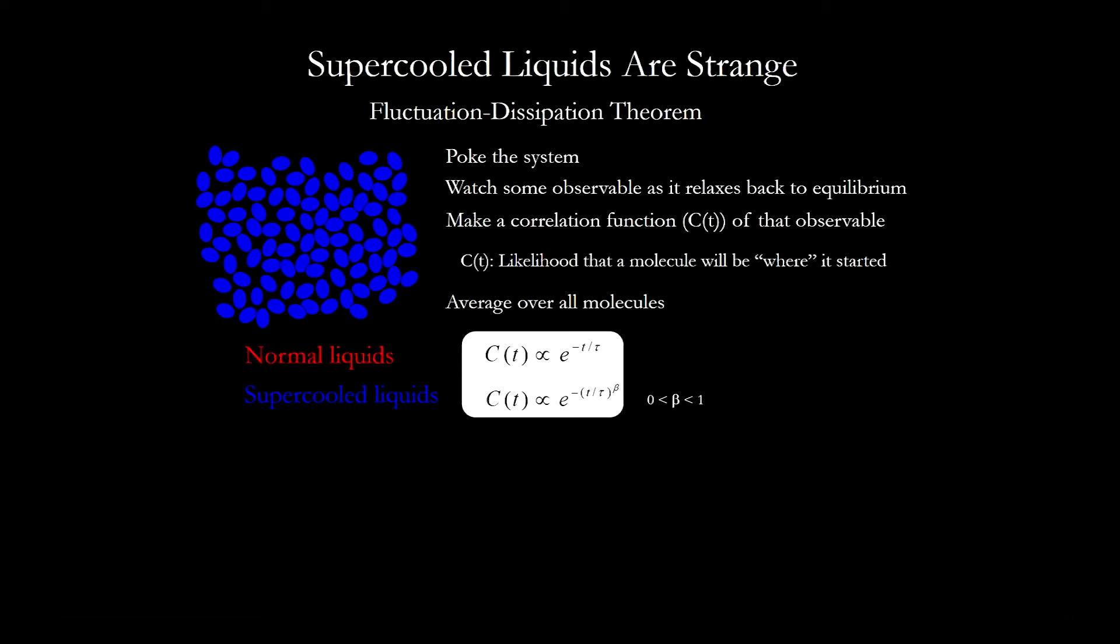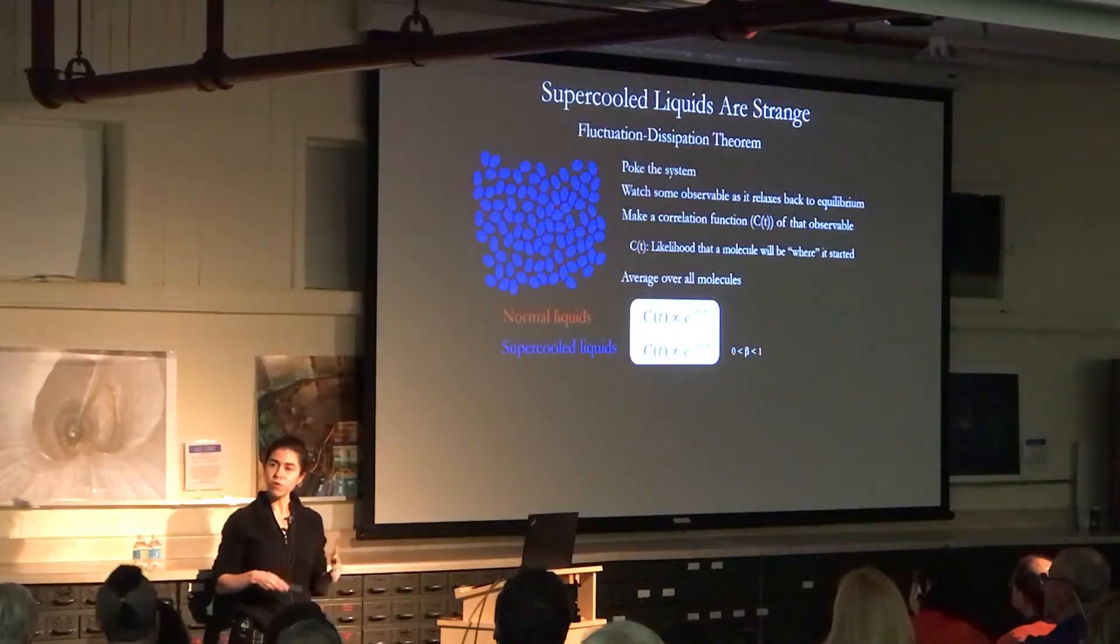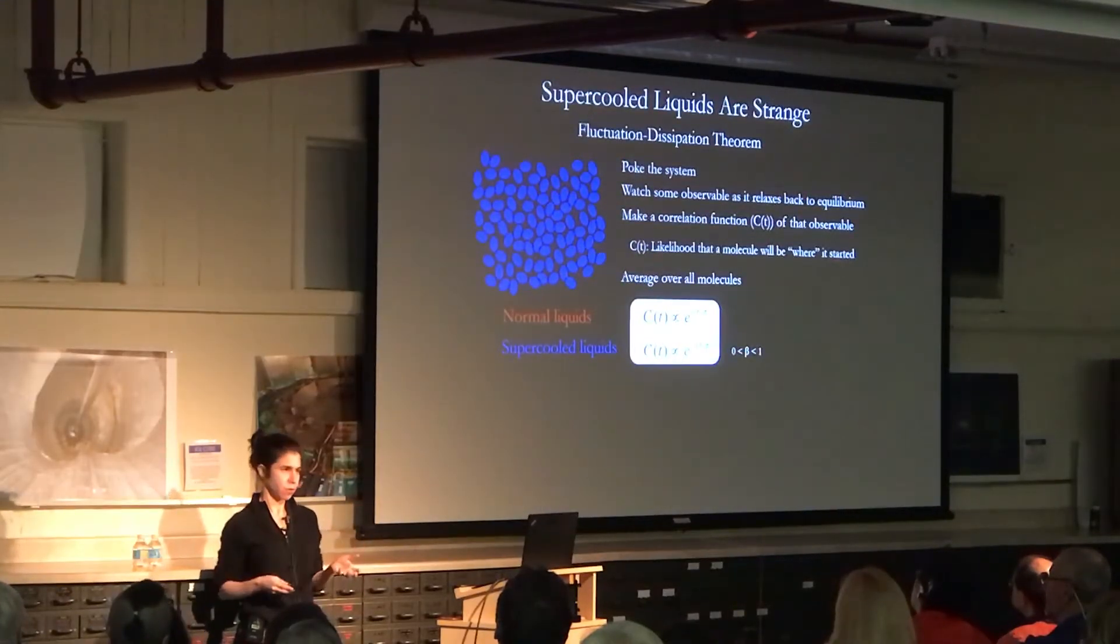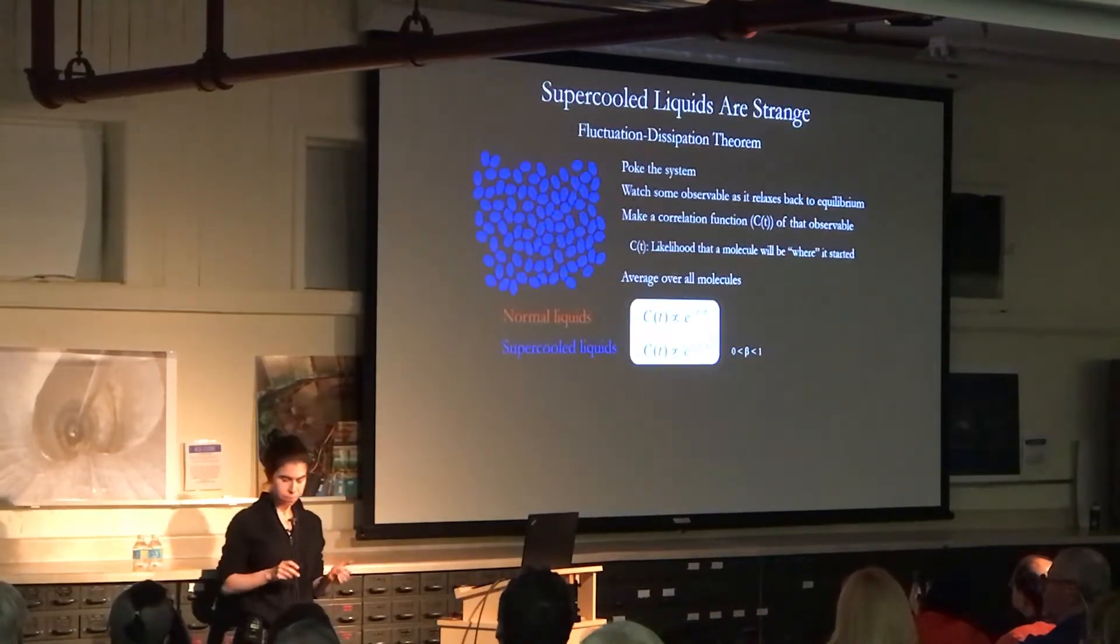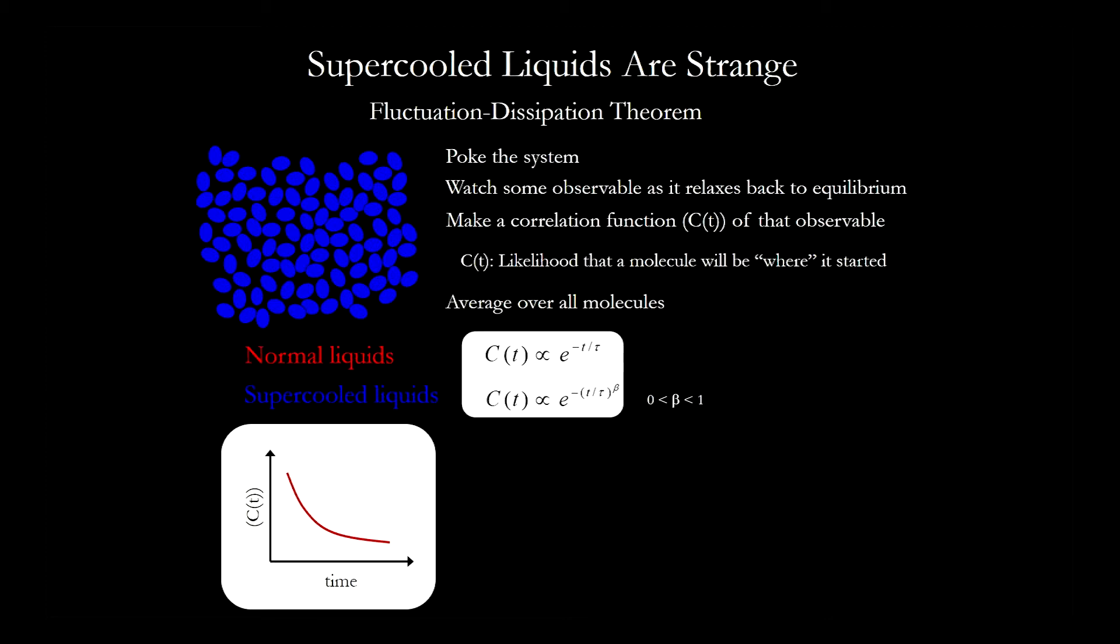And so just like the liquid had this single underlying time scale, the physical meaning of this stretched exponential decay, well, it's much debated. But most people say, well, what we think it means is that there are a whole bunch of different time scales in the system, and we're averaging over all of them. We're catching all of them.